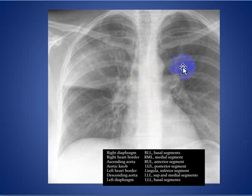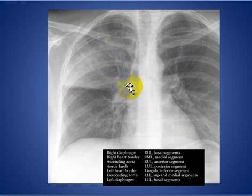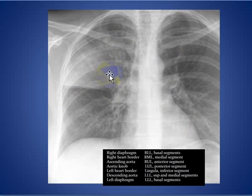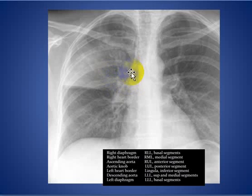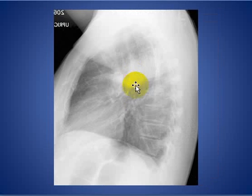Here you see a cardiac opacity, but in this case the ascending aorta region is not obliterated by that soft tissue density. Because it is not obliterating the ascending aorta, the lesion is located posteriorly — if it were obliterating the ascending aorta, it would be located anteriorly. As confirmed on the lateral chest X-ray, this lesion is located posteriorly.